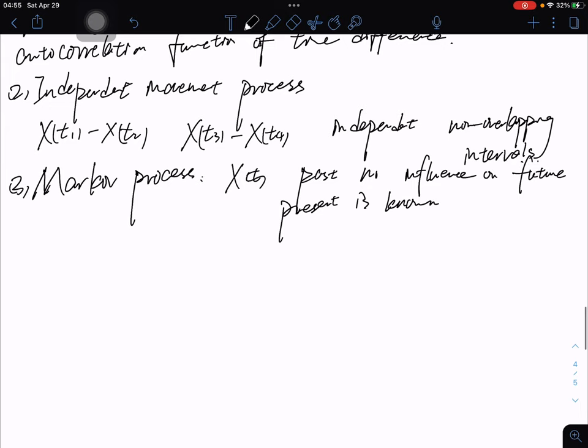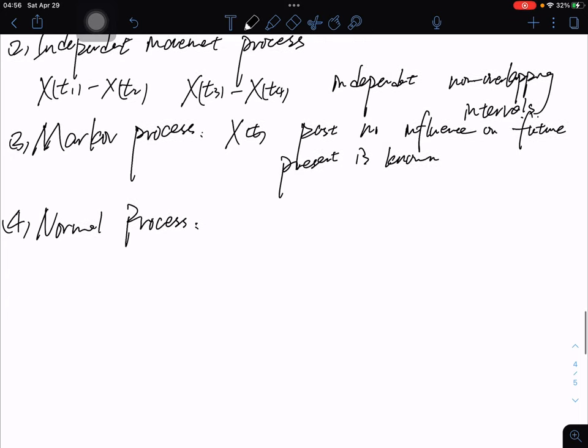And the fourth, we call normal process. X(t) is normal if X(t1), X(t2), ..., X(tn) are jointly normal.